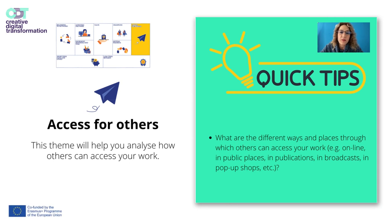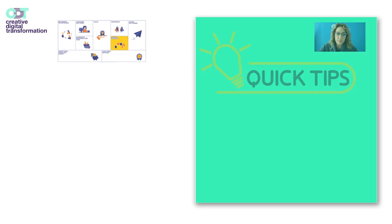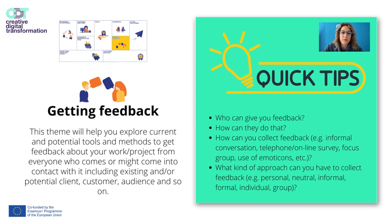The Access for Others theme will help you analyze how others can access your work. Think about the different ways and places through which others can reach it — for example, online, in public places, through publications, broadcast, pop-up shops, and so on. The Getting Feedback theme will help you explore current and potential tools and methods to get feedback from everyone who comes into contact with your work, including existing or potential clients, customers, and audience.